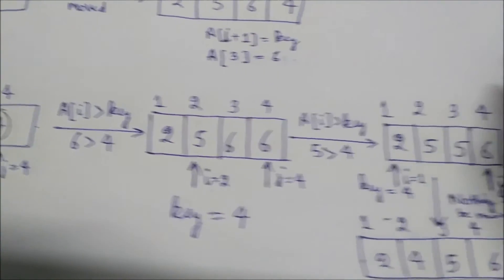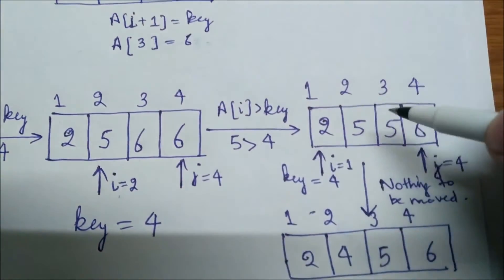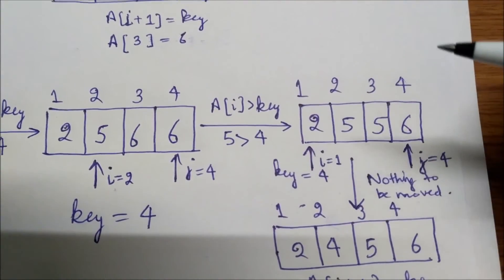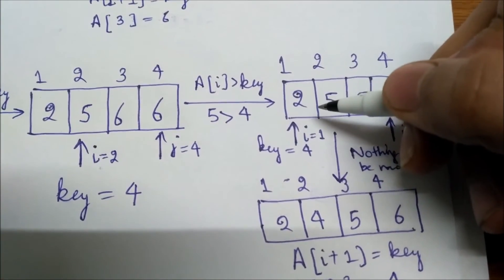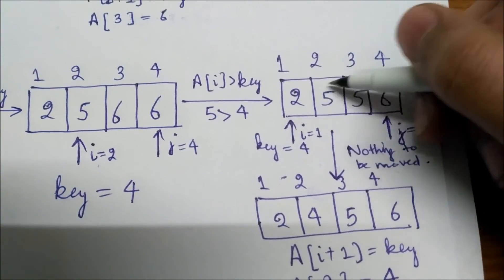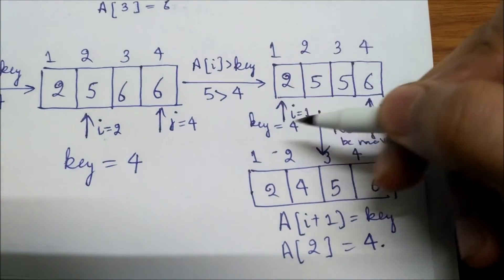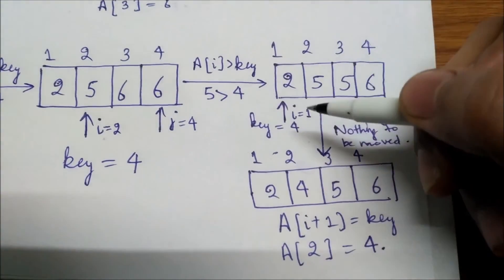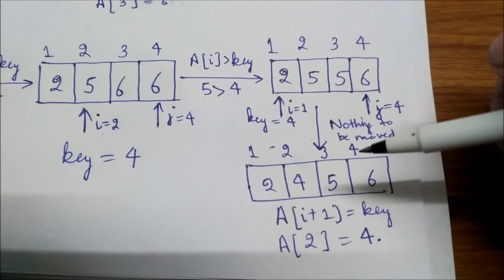So a[3] (a[i+1]) becomes a[2] which is five, and i is decremented to one. We check the while loop again: i=1 is greater than zero, but a[1] is two, which is not greater than four. So the while loop exits. This is the correct position for key. We set a[i+1], that is a[2], equal to key which is four. The array is now 2, 4, 5, 6 — fully sorted.